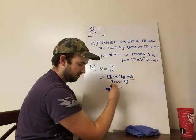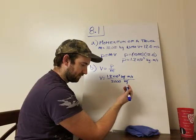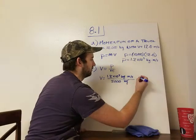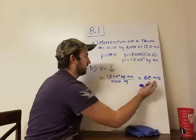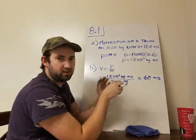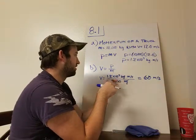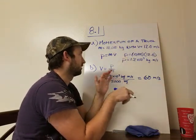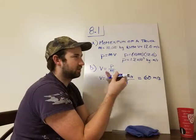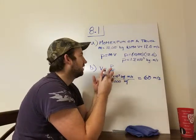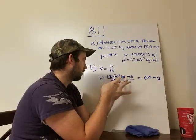And when we do the math, we end up with 60 meters per second. So that means that this SUV is going to have to go 60 meters per second in order to have the same momentum as this 10,000 kilogram truck that's going 12 meters per second, which makes sense. It's going to need to go a lot faster since the masses are so different. So that's part one of part B.